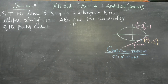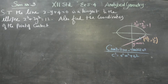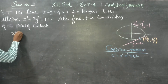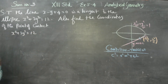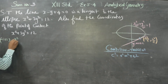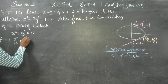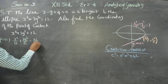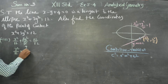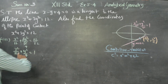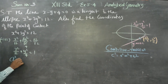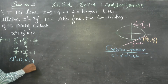Coming to our ellipse: x² + 3y² = 12. Dividing fully by 12, you get x²/12 + 3y²/12 = 1, which simplifies to x²/12 + y²/4 = 1. This is of the standard type. The biggest number is a², so a² = 12, and the smallest number is b², so b² = 4.